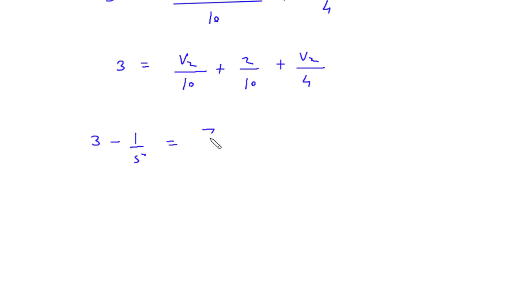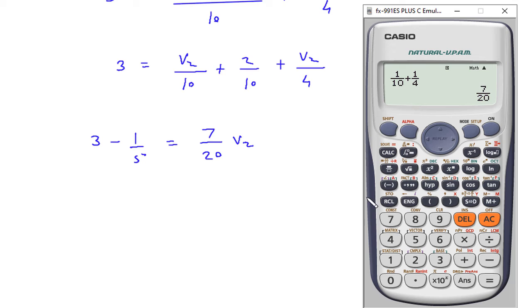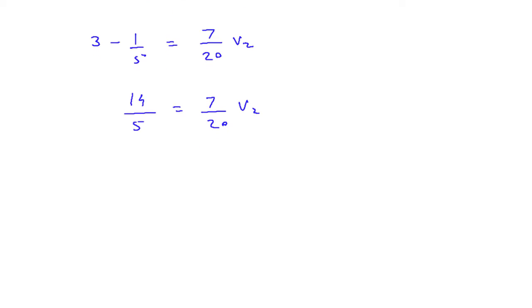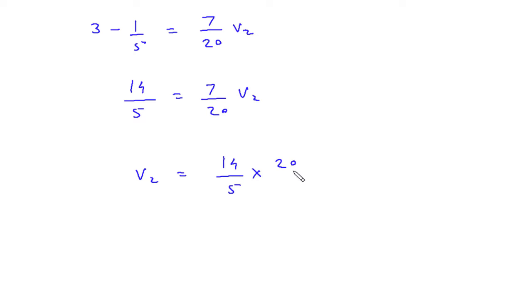So this will be 3 minus 1 by 5, so this will be 14 by 5 is equal to 7 by 20 V2. So this will be V2 is equal to 14 by 5 into 20 by 7.